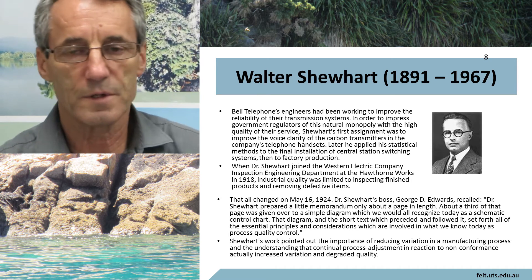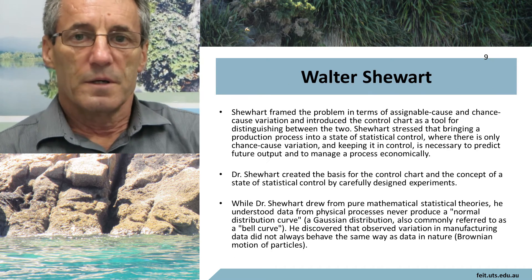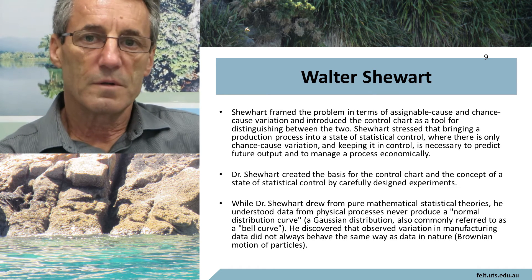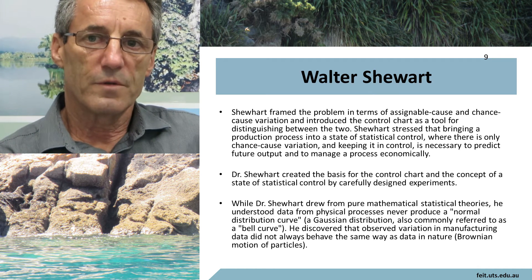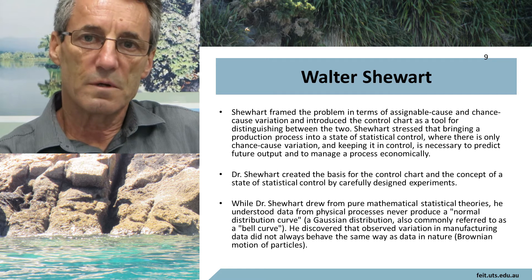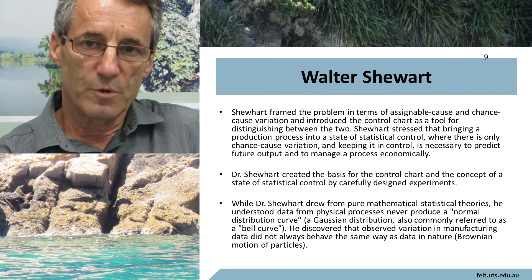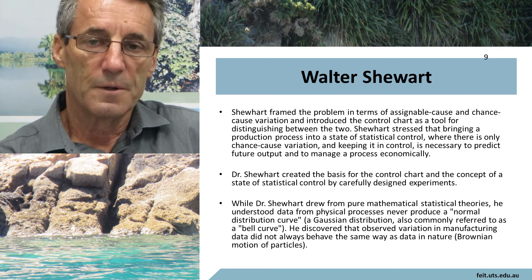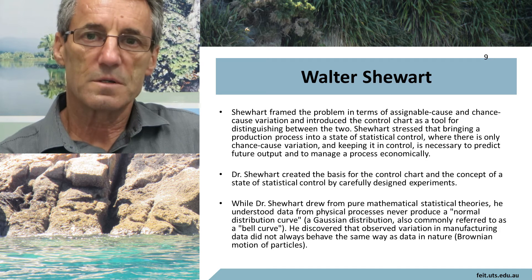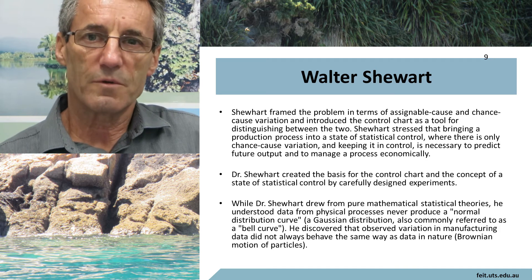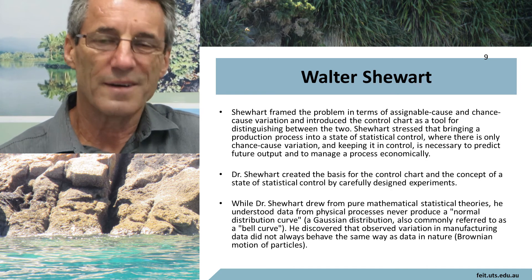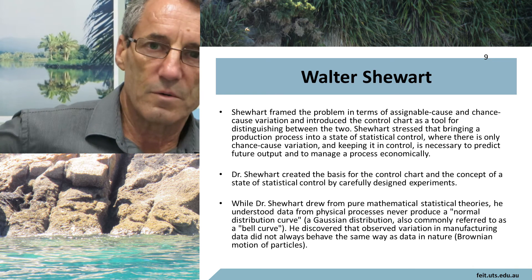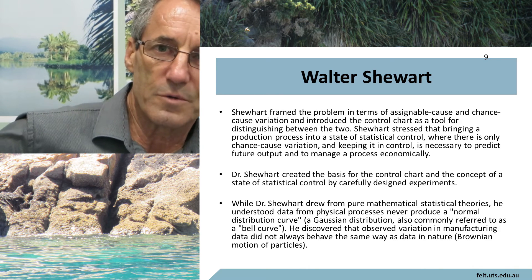That's the first thing he looked at. He examined the problem of quality in terms of assignable causes — that is, causes you could find a specific reason for — or just random causes, where there wasn't any specific reason; it was simply an outcome of the way things were done. We would now call those common cause errors.